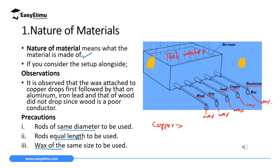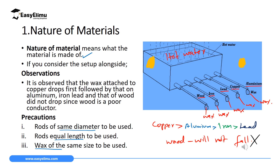After aluminium, the wax attached to iron will fall next. Then it will be followed by the wax attached to lead. Surprisingly, the wax attached to wood will not fall at all. This means copper is the best conductor of heat, followed by aluminium second, iron third, and lead fourth, while wood conducts the least.